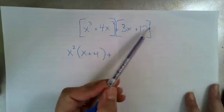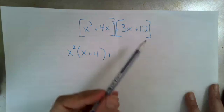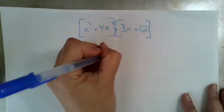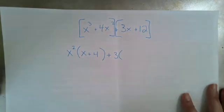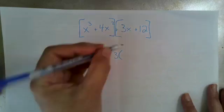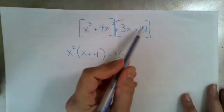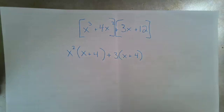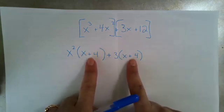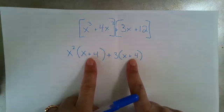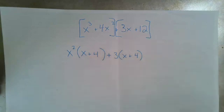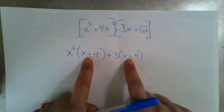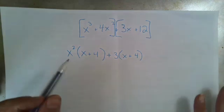For the second group, 3x and 12 — what's my greatest common factor? I do not have an x in both terms, but I do have a 3 in both terms. So 3 is going to be my greatest common factor. 3x divided by 3 leaves me with an x. Positive 12 divided by 3 leaves me with a positive 4. Here's your check: if what is inside these parentheses is the same, then factoring by grouping will work. If what's inside these two parentheses are not the same, then abort — you cannot go further. You've got to go back and figure out how to factor this differently.